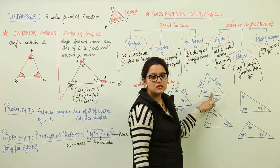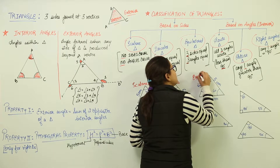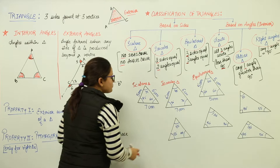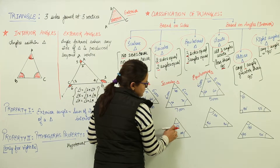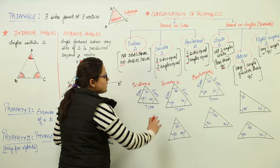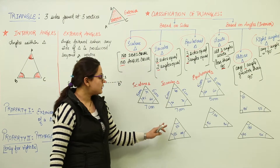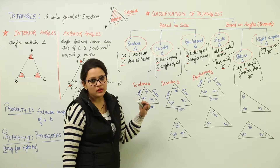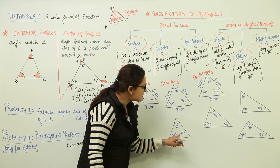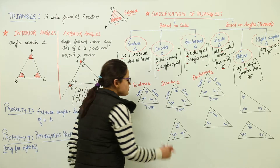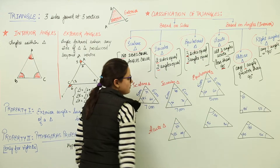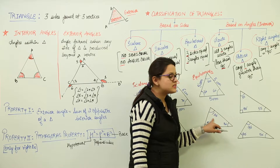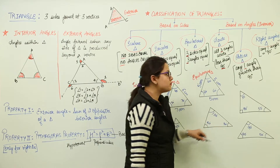Next, we have each side equal to 5 cm and each angle equal to 60 degrees — this is an equilateral triangle. Now for classification by angles: a triangle with angles 55°, 85°, and 40° — all three angles are less than 90 degrees, so this is an acute triangle. A triangle with angles 100°, 30°, and 50° — one angle is greater than 90 degrees, so this is an obtuse triangle.